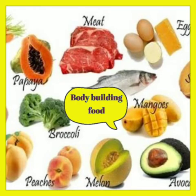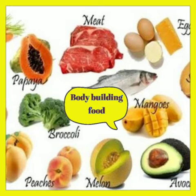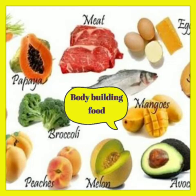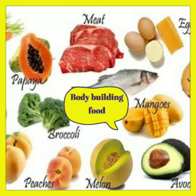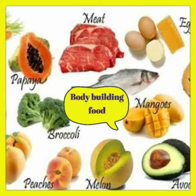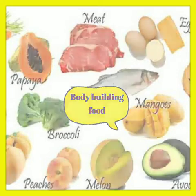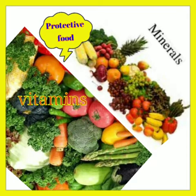Sources of protein include milk and its products, chicken, fish, eggs, pulses, and soybean — these are food items rich in proteins. Growing children like you need more proteins, so you should take protein-rich food items so that you will grow.